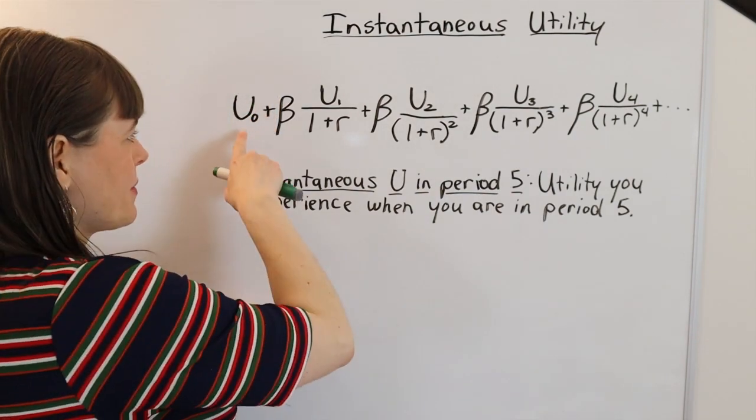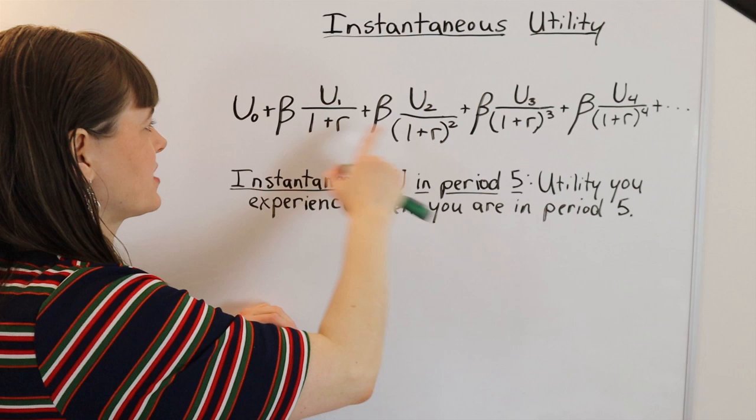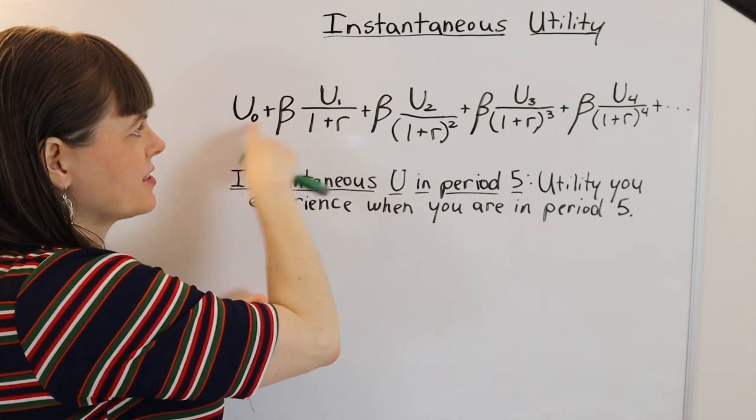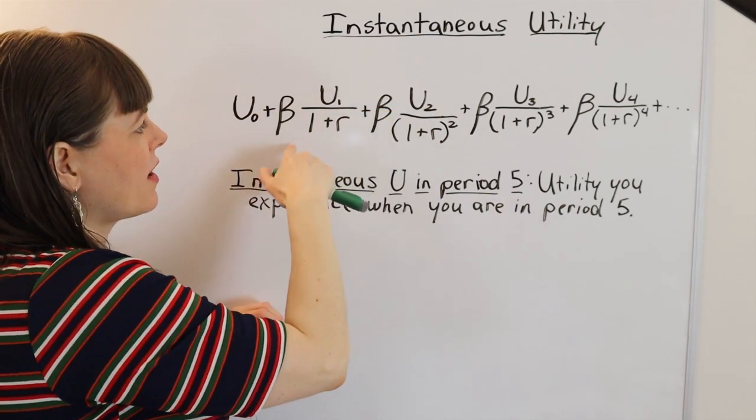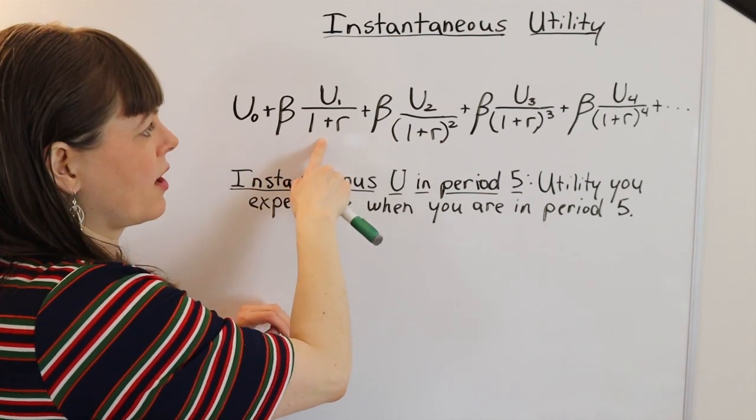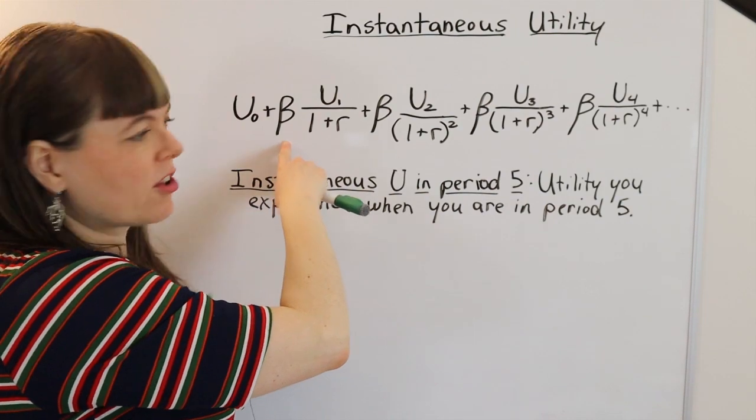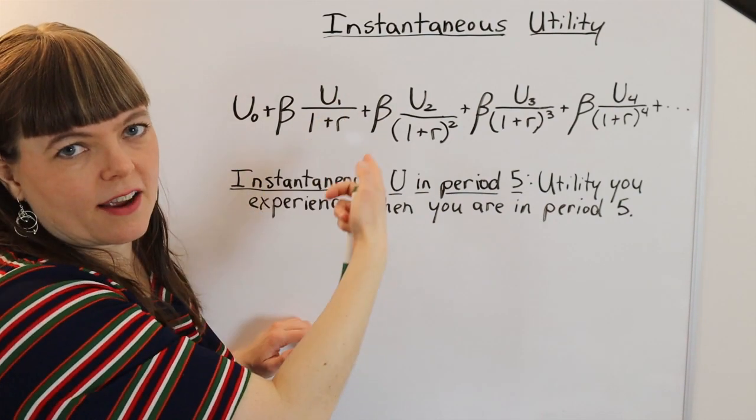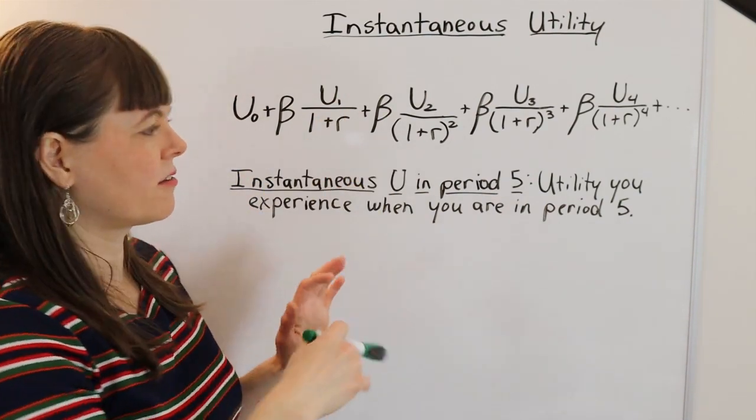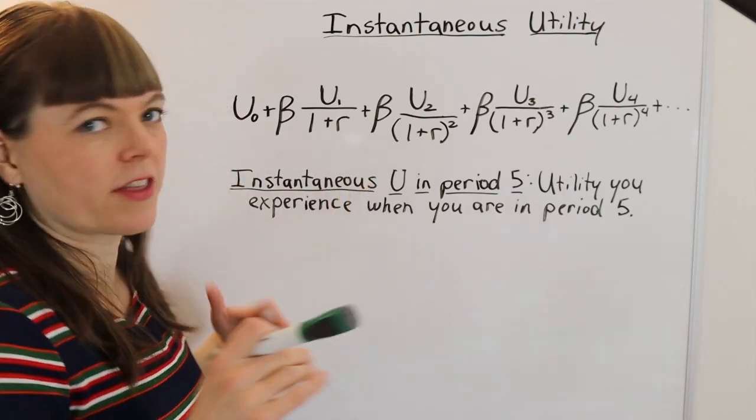So if you're an economist, you're familiar with something that looks like this, where you have utility in period zero, utility in period one, and of course you're discounting utility in period one by one over one plus R. And if you're a behavioral economist, you might throw a beta in there for the beta delta discounting model. That's totally optional for this video.